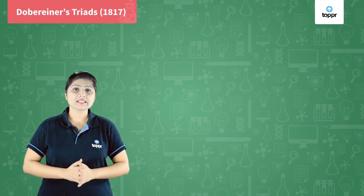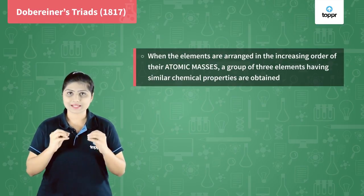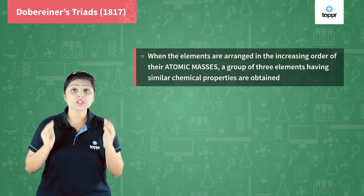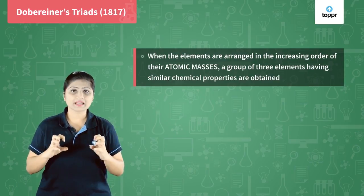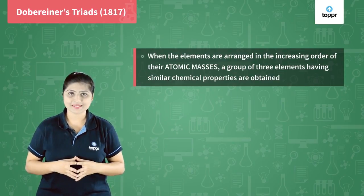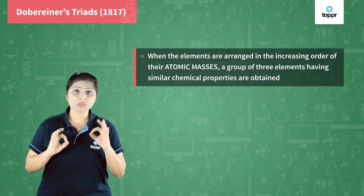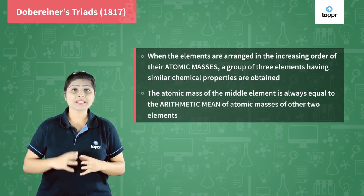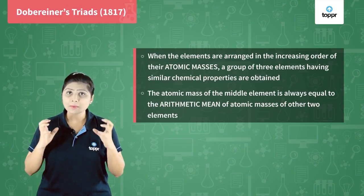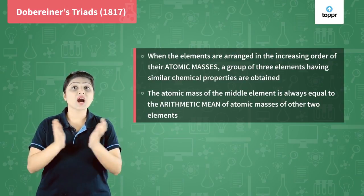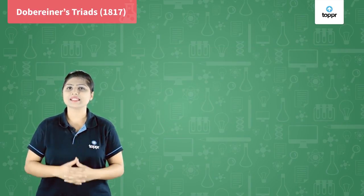He started classifying elements in increasing order of their atomic masses. He found that a group of three elements could be obtained having similar chemical properties. He also observed that in each group of three elements, the middle element's atomic mass is always equal to the arithmetic mean of the atomic masses of the other two elements. Let me give you one example.